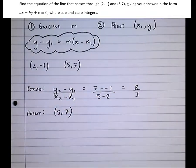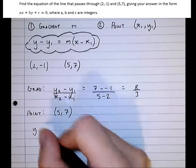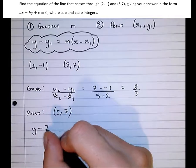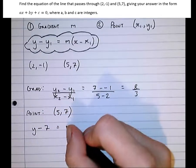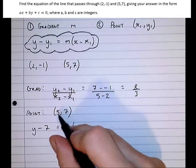You might disagree, in which case pick (2,-1), but you'll get the same answer. So now subbing it into the equation, we get y minus y₁ equals m times x minus x₁.